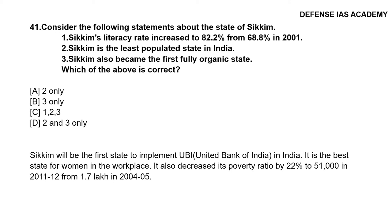Question 41: Consider the following statements about the state of Sikkim: 1. Sikkim's literacy rate increased to 82.2% from 68.8% in 2001; 2. Sikkim is the least populated state in India; 3. Sikkim became the first fully organic state. The correct answer is option C, all three — 1, 2 and 3 — are correct. Sikkim was the first state to implement UBI in India, is the best state for women in the workplace, and decreased its poverty ratio by 22%.